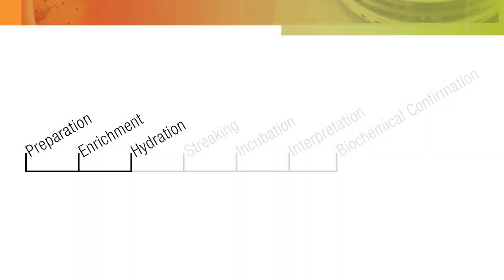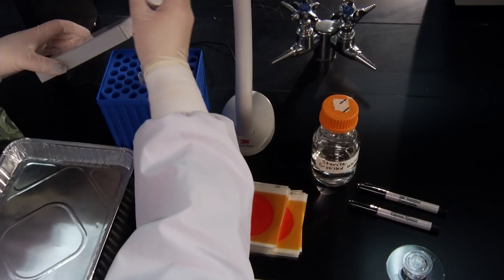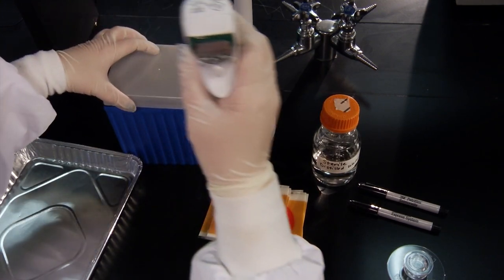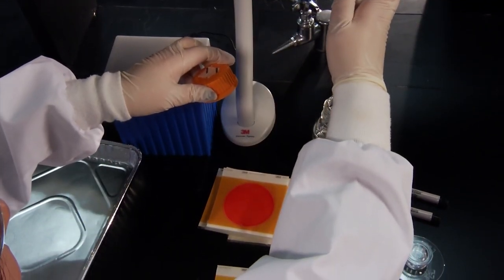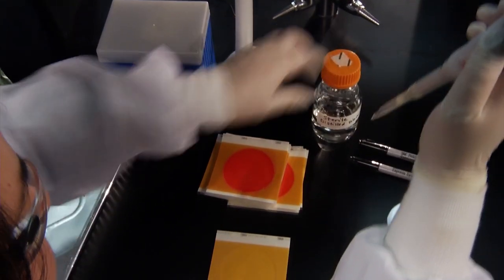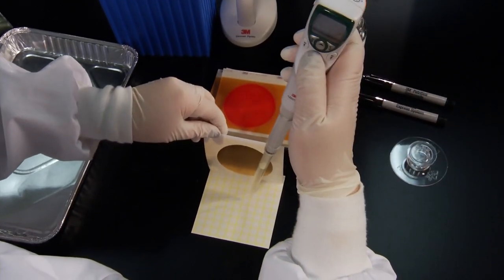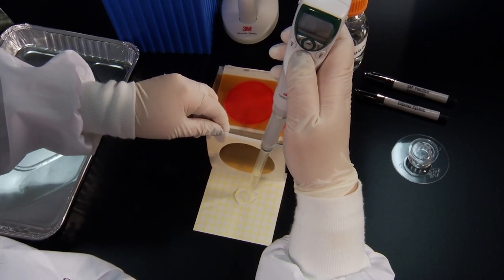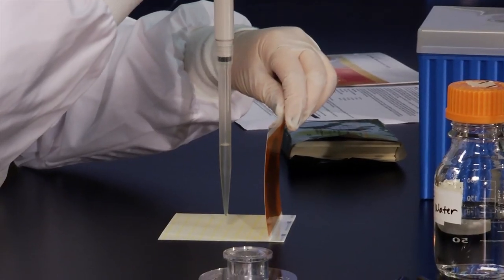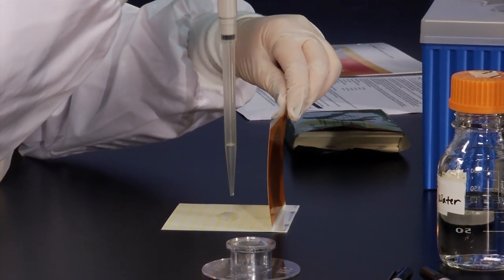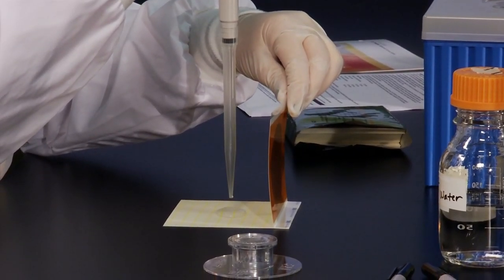The next step is the hydration procedure. To hydrate the 3M PetriFilm Salmonella Express Plate, place the plate on a flat level surface. Lift the top film and with the pipette held vertically, dispense 2.0 milliliters of the prescribed sterile diluent onto the center of the bottom film. Do not close the top film before dispensing the entire 2.0 milliliter volume.